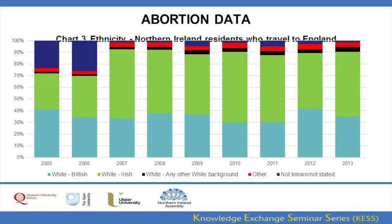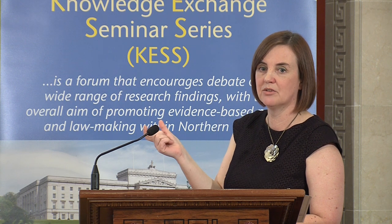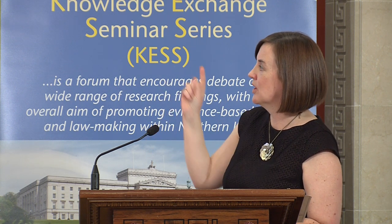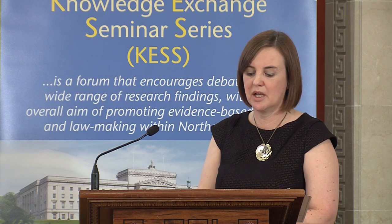Those who travel are also asked how they identify in terms of their ethnicity. Looking at the years from 2007 to 2013, those who self-identify as white British and those who identify as white Irish are the two main categories selected by those who travel, with the majority identifying as white Irish.